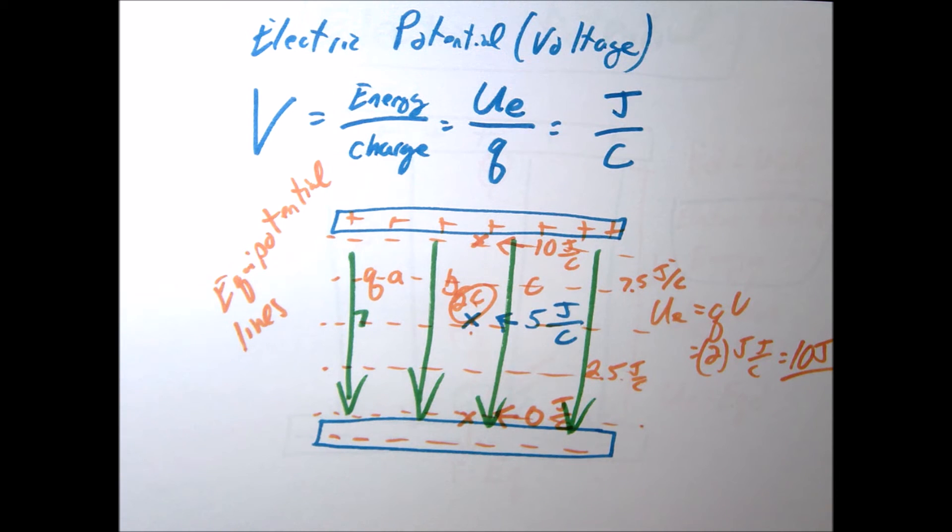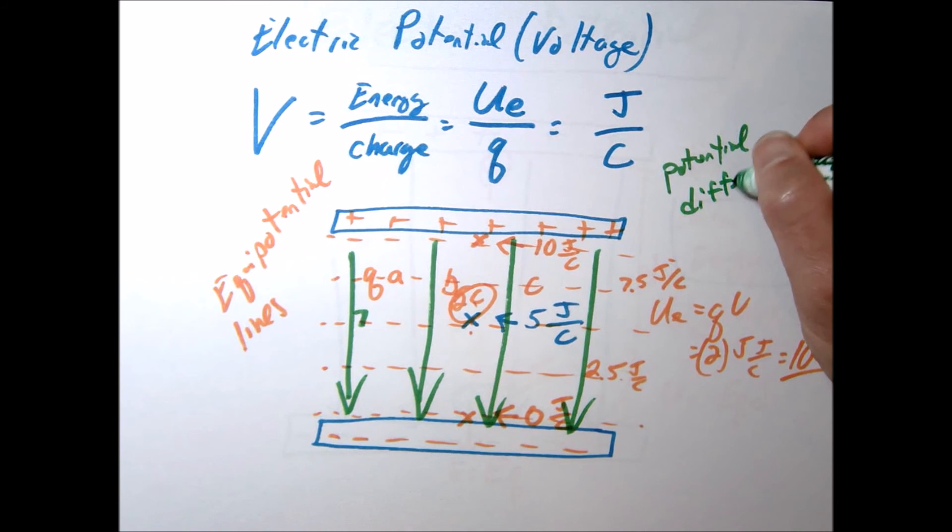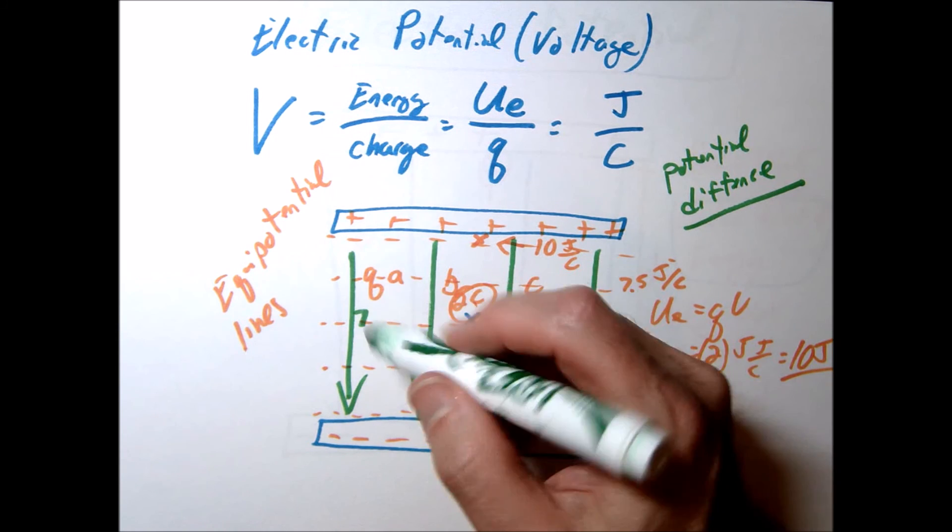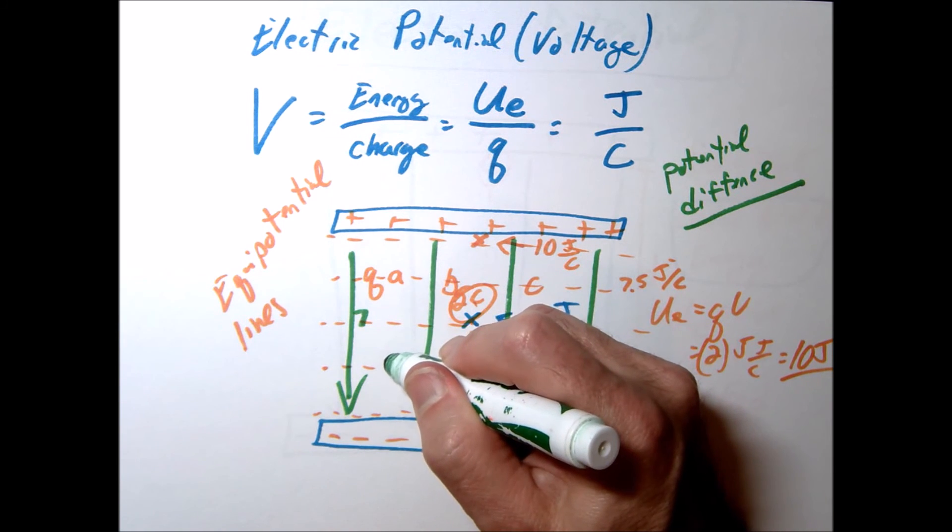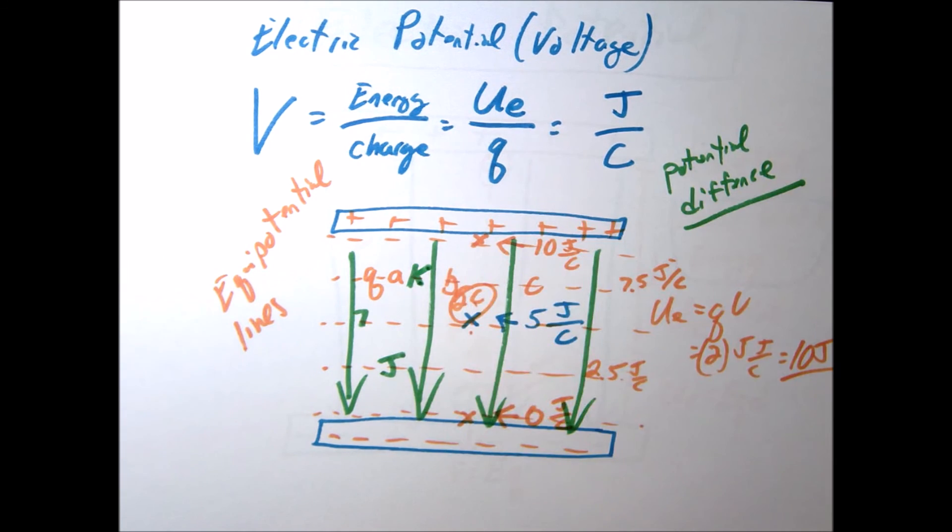The last little term I just want to kind of define that's often used is potential difference. And this one is not really that difficult to think about, especially when you hear that word difference. So potential difference is just, well, the difference between two lines of potential. So for example, if I started here, let's call this J, and I ended here at K, right, the potential difference, and we usually just write this as a delta V, the change in potential, that would just be, well, like a VK minus VJ, right, V final minus V initial.